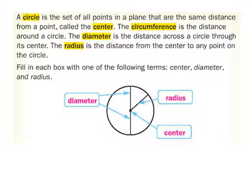I'm looking at a circle, which really is just an infinite number of points that are a certain distance away from the center of the circle, which we can see here. If we were to plot them all, then we would have our circle.